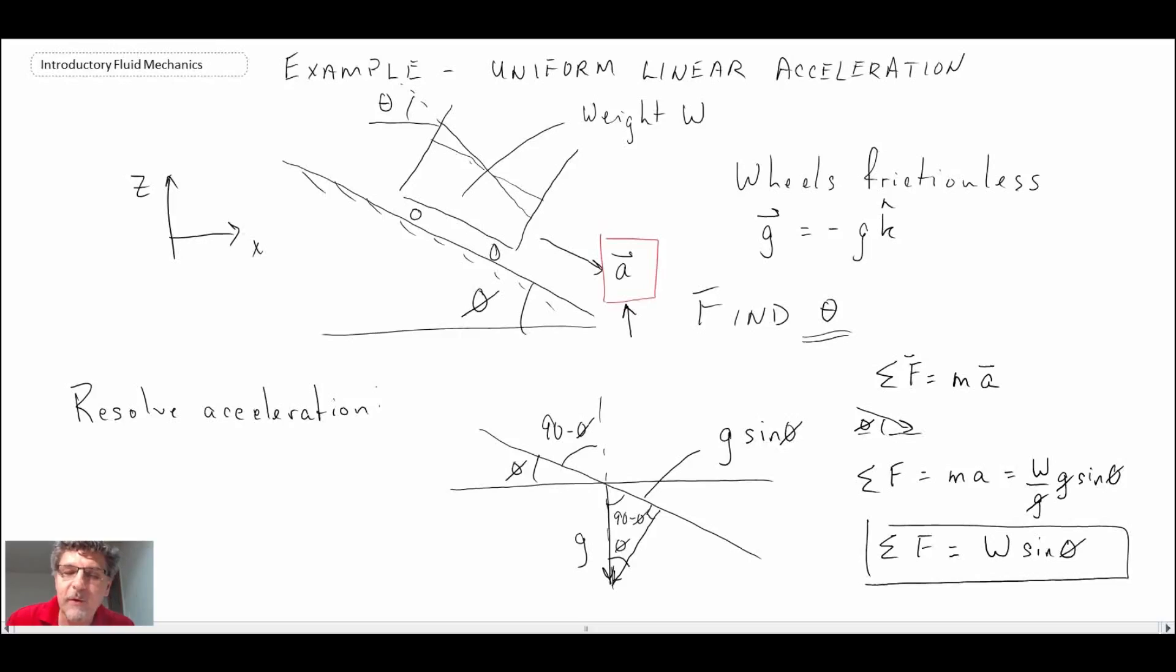That gives us one piece of information that is not really exactly useful in terms of determining theta. The next thing we're going to do is break down the acceleration vector in terms of our x and z coordinates, referring back to what we did in the earlier segment where we're comparing to the free surface where there would be no acceleration of our container.